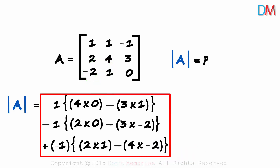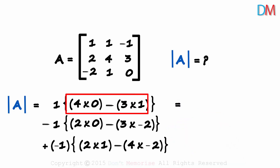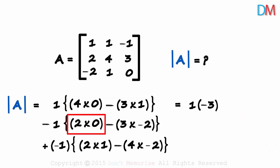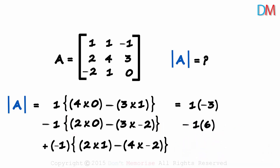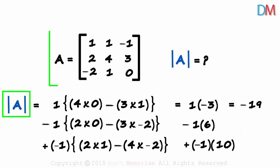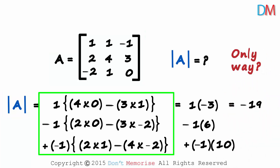Now we calculate the full value. 4 times 0 minus 3 times 1 equals minus 3, so we have 1 times minus 3. Then 2 times 0 minus 3 times minus 2 equals 6, giving minus 1 times 6. And minus 1 times 10. So minus 3 minus 6 minus 10 equals minus 19. The determinant of matrix A is minus 19. This was one way to solve for the determinant of a 3 by 3 matrix, and we will continue with other methods in the coming lessons.